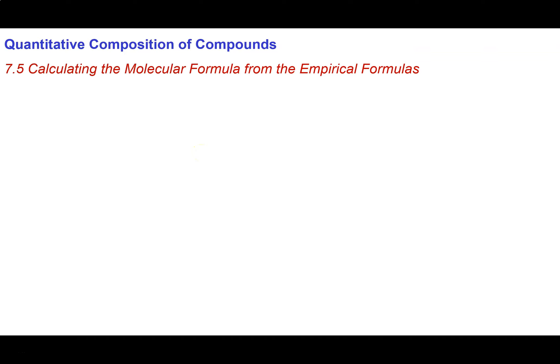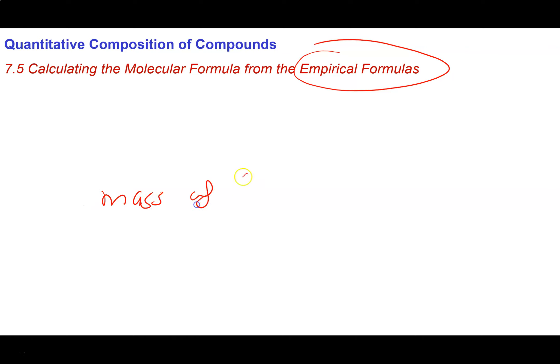What we've learned so far is how to calculate the empirical formula of a compound from percent composition. The question becomes, can we turn that into the molecular formula? And the answer is we can, but we require an additional piece of information. In particular, what we need is the mass of the molecule.